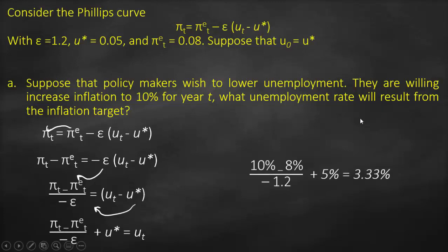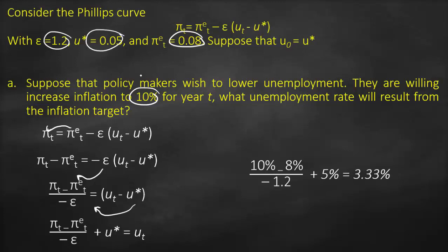Substituting the values, unemployment equals (10% minus 8%) divided by negative 1.2, plus 5%, which gives us 3.33%. Consequently, when we increase inflation in the short run, our unemployment will decrease to 3.33%.